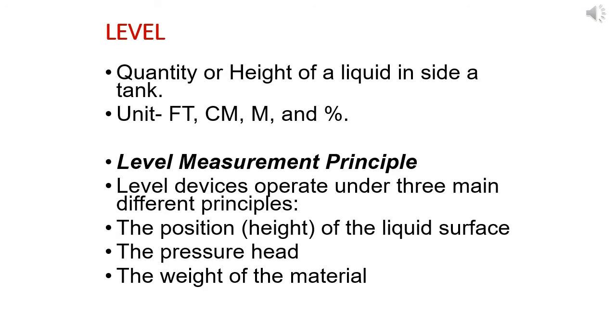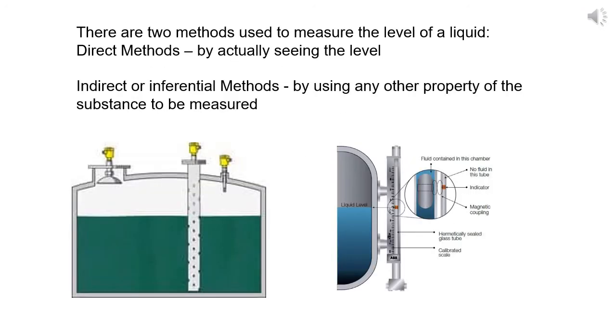There are two methods used to measure the level of a liquid. Direct method is by actually seeing the level inside the tank. Indirect or inferential method is by using any other property of the substance to be measured. For example, in a car engine we are taking the level using a dipstick - that is a direct method. But for a huge tank or far away locations where we cannot easily access, we use indirect methods.